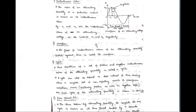The first term is instantaneous value. The value of an alternating quantity at a particular instant is known as its instantaneous value. For example, if v1 and v2 are the instantaneous values of an alternating voltage at instants t1 and t2 respectively, you can observe in this diagram there are t1 and t2 on the x-axis and v1 and v2 are the voltages with respect to those particular times.